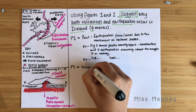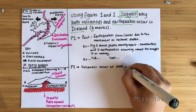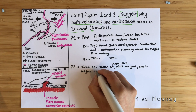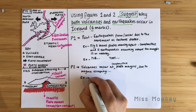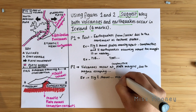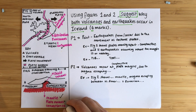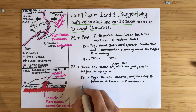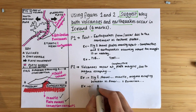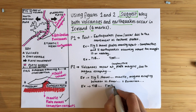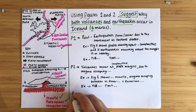In paragraph two, we're going to focus on volcanoes. The point is that volcanoes occur at constructive plate margins because magma can escape between those margins. The evidence we're going to use is figure two, which shows how the mantle and magma is escaping between the two plates. We'll name those plates — the North American plate and the Eurasian plate — to show we've used both figures. Then explain using 'this is because' and 'this means that,' including key terms and bringing in as much knowledge as possible. You may also want to talk about the general plate tectonics theory and why those plates are moving apart to expand your answer.